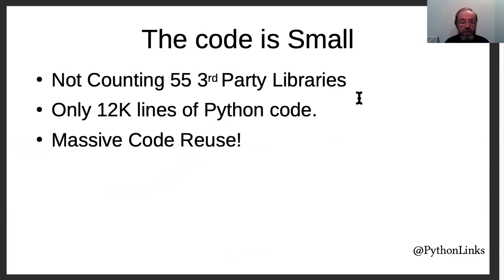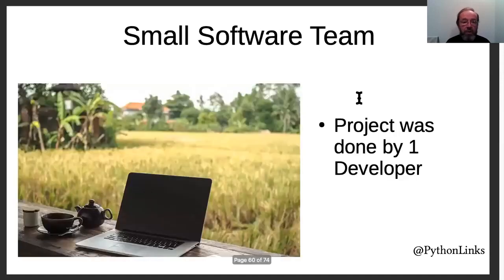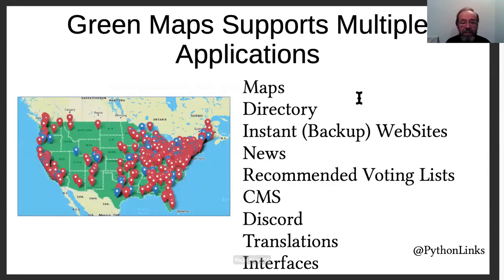If you're going to be efficient, you also want the code to be small. Not counting third-party libraries, there are only 12,000 lines of Python code plus some JavaScript. Massive code reuse leads to very small code, so you only need one developer. Remember, there are six different applications in here: national and state maps, a directory, instant backup websites, news, recommended voting list — that's a whole content management system — and a Discord bot, though that was in Ruby so we're not counting that.